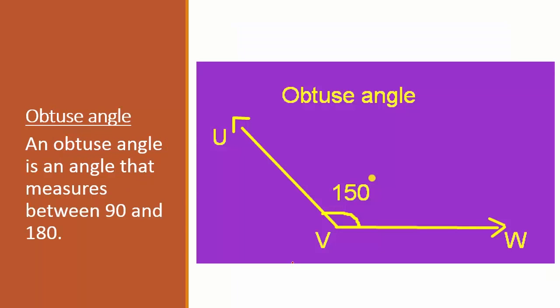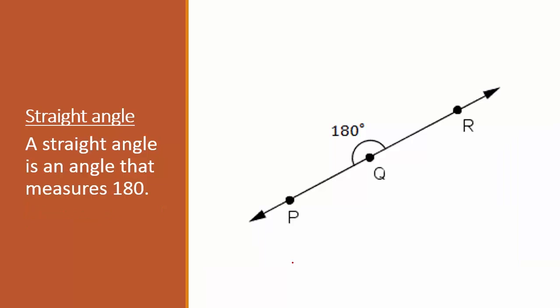Obtuse angle. An obtuse angle is an angle that measures between 90 and 180 degrees. Straight angle. A straight angle is an angle that measures exactly 180 degrees.